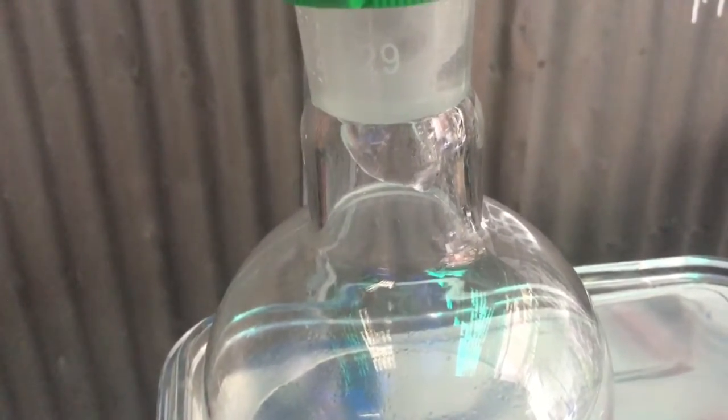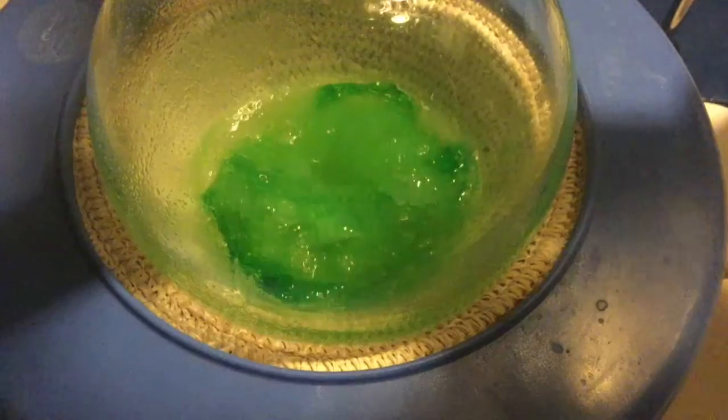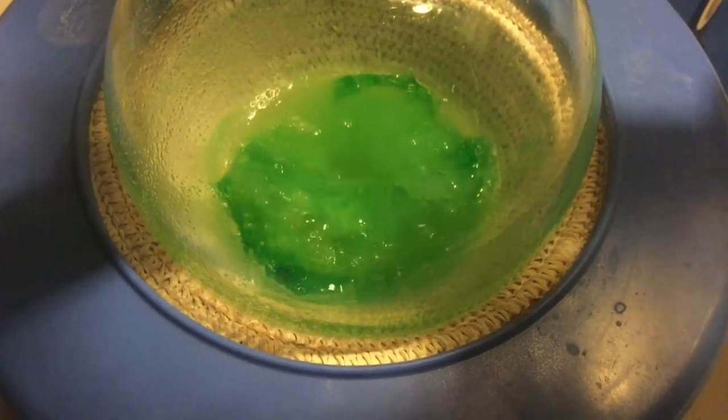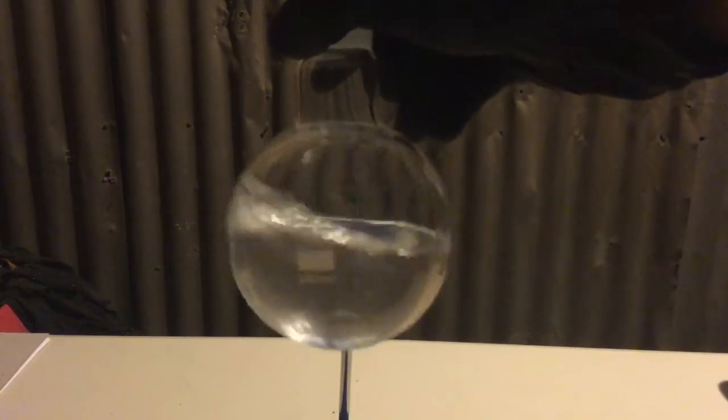The distillation was considered finished and stopped when no more distillate came over and it appeared the mixture in the boiling flask as you can see here was simply refluxing. This is the amount of DCM I got from the distillation and it's not completely clear. This is probably because when I first started the distillation I turned the temperature too high and about 30ml of cloudy distillate came over.